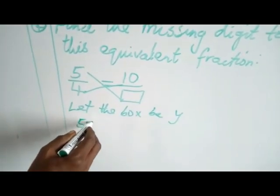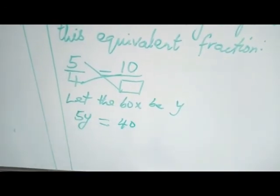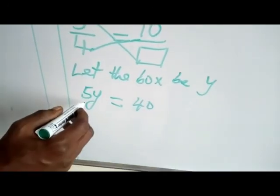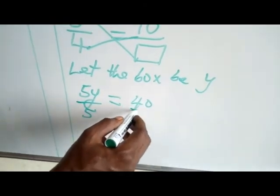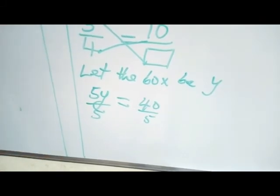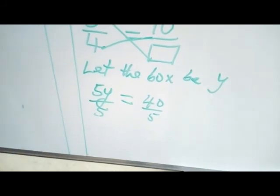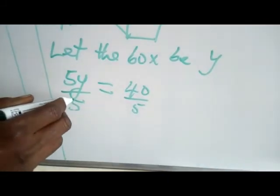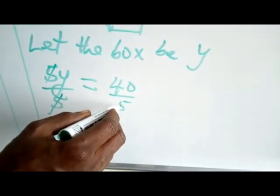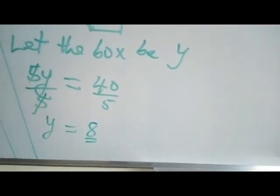y times 5 will give me 5y. It equals 4 times 10 which gives me 40. Now because I am looking for the unknown which is y, what I need to do is divide both sides by 5. Make sure whenever you are dividing, the number you are going to divide must eliminate the other number. 5 can eliminate 5 and I am left with only y. Then 40 divided by 5 is going to give me 8. This is how to find equivalent fractions.